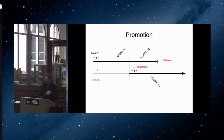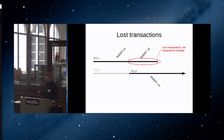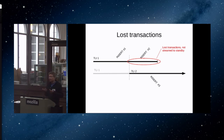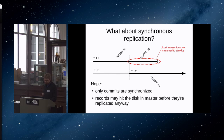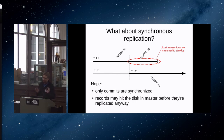There will always be some transactions on the master that were not copied to the standby. Of course, if the system was completely idle you might be lucky, but you always have to be prepared. A lot of people say that's what synchronous replication is for — but that doesn't actually help. There is still always the possibility that you have a transaction committed on the master but not copied to the standby, because synchronous replication is not magic.